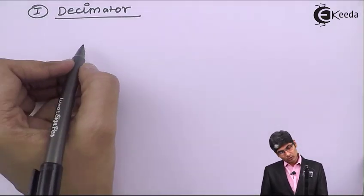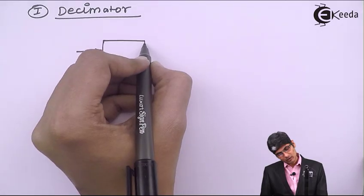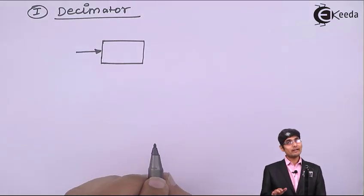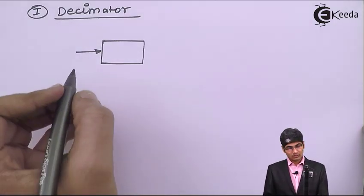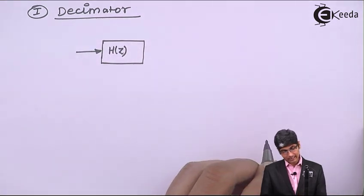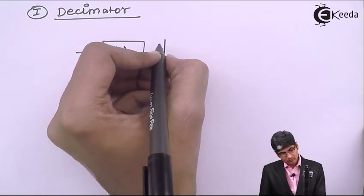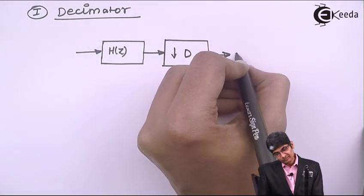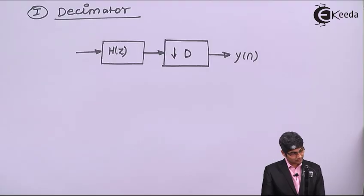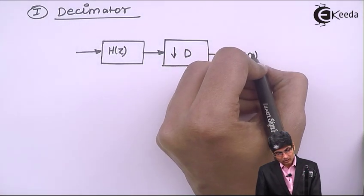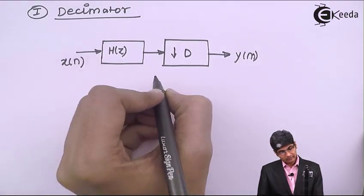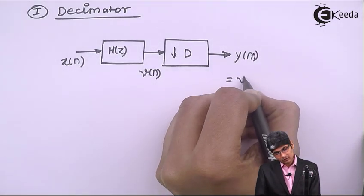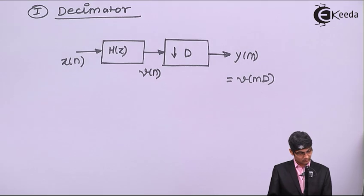In a decimator, we cannot give the input directly to the down-sampler because it will produce an aliasing effect. To avoid that, we apply a filter H(z), and then we have a down-sampler D. The output is Y(m), the input is X(n), the intermediate node is V(n), and Y(m) equals V(mD).